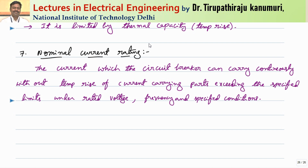In summary, the circuit breaker nameplate includes: rated voltage (maximum continuous voltage it can withstand), nominal voltage (rated system voltage), number of poles, rated short circuit breaking capacity, rated short circuit making capacity, nominal current rating, and rated operating sequence — indicating whether it is designed for auto reclosing or not. Next class we will start different types of high voltage circuit breakers, covering construction, advantages, and disadvantages of each.